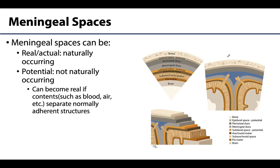A reminder on what is the difference between a real and potential space. A real or actual space is going to be naturally occurring — sometimes it's visible, but it will certainly be naturally occurring — whereas a potential space is typically not naturally occurring. A potential space can become a real or actual space with the entrance of blood, other fluids, or air that will separate normally adherent structures or normally adherent meningeal layers.